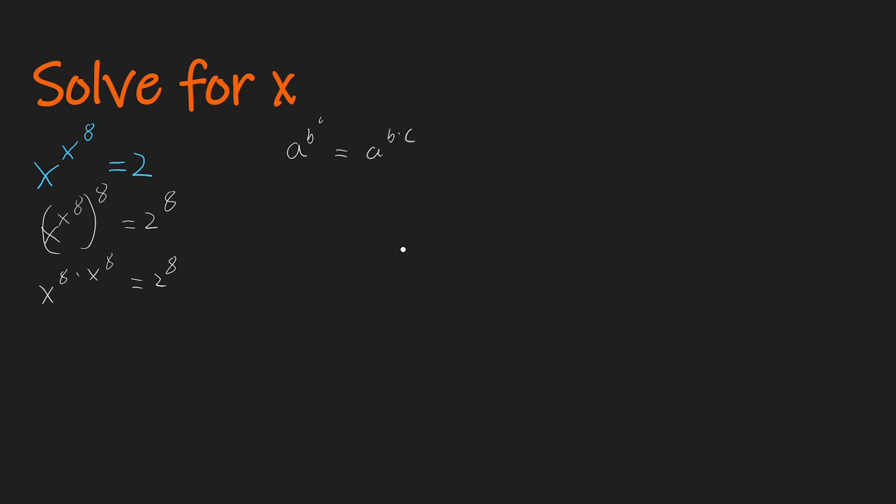Now we'll use another rule of power. It is actually the same, because if we have this, we can also write this is equal to a power to the c power to the b. So if we look at this, we can say that this is x power to the 8, which is power to x power to the 8, still equal to 2 power to the 8.